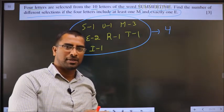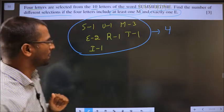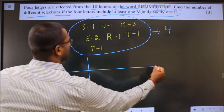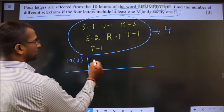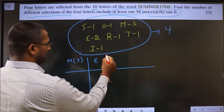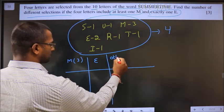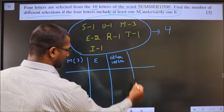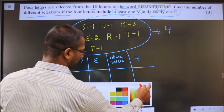I get multiple options satisfying the condition so I will make a table. One column I put for M. There are three M's. One column I put for E and other column for remaining letters. And the total count has to be 4.